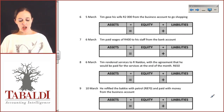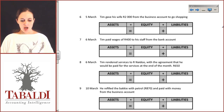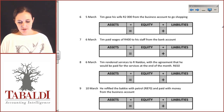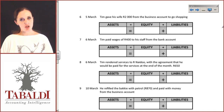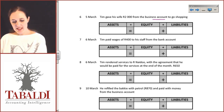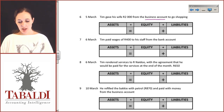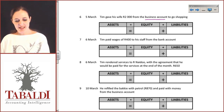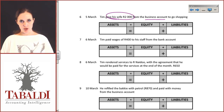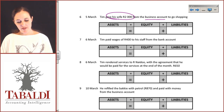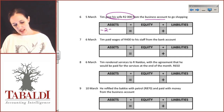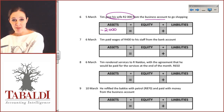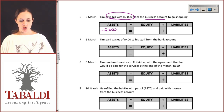Let's continue. I hope you're comfortable with these so we can move through them a little bit faster. On the 5th of March, Tim gave his wife 2,000 Rand from the business account to go shopping. From the business account means this impacts the bank, so we need to be aware of how this moves the bank. We are decreasing the bank account by 2,000 Rand because the business's bank account has dropped.